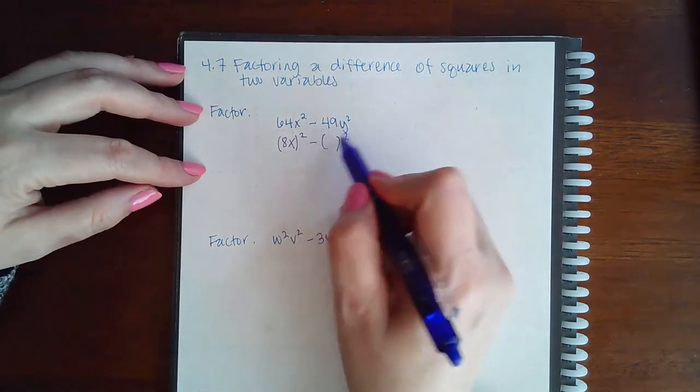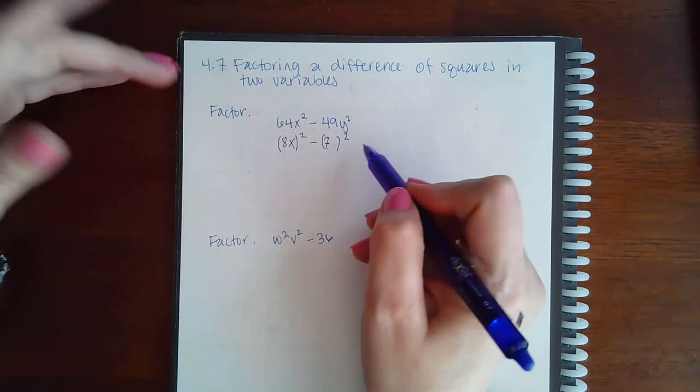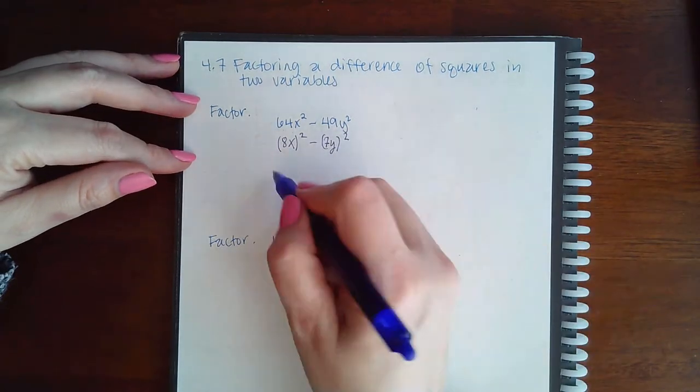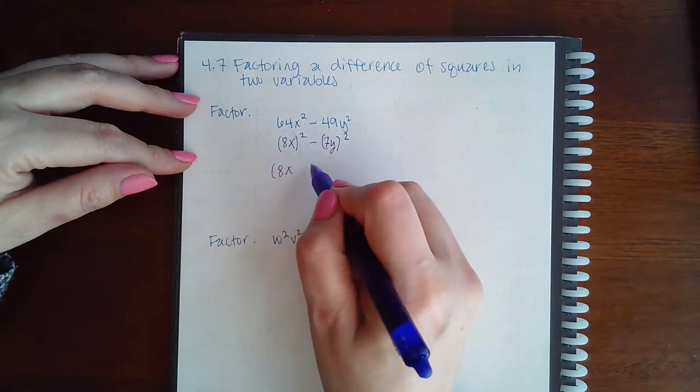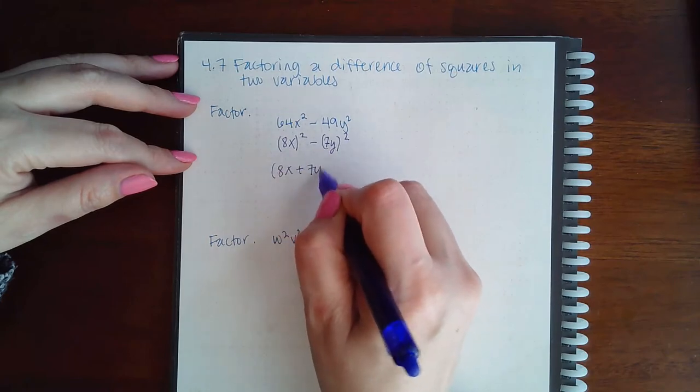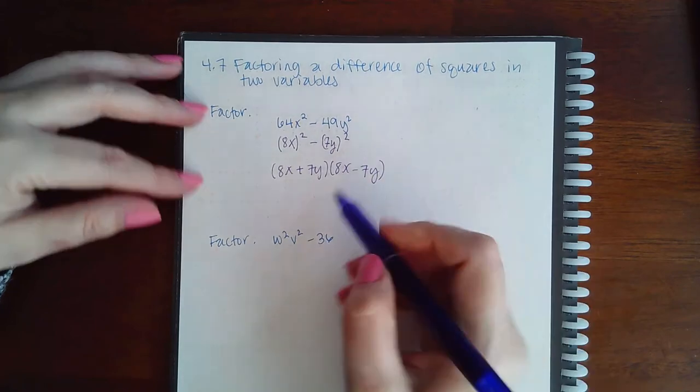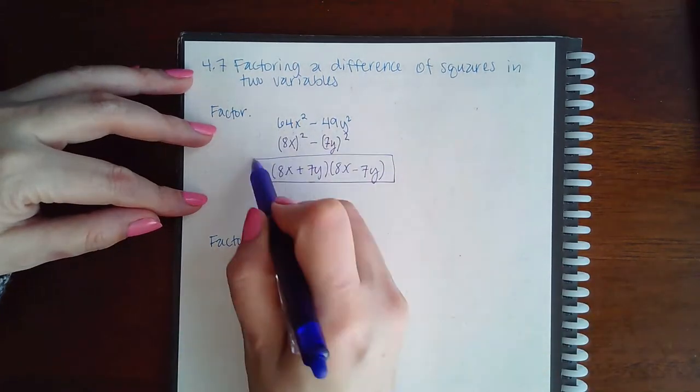Here I know that 7 squared is 49 and y squared is y squared. So that means I will have 8x plus 7y and then 8x minus 7y. And if you multiply that out, you will end up with this expression.